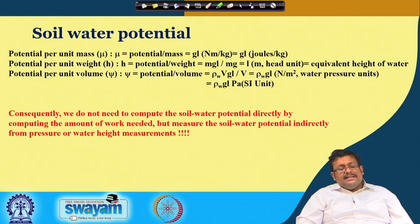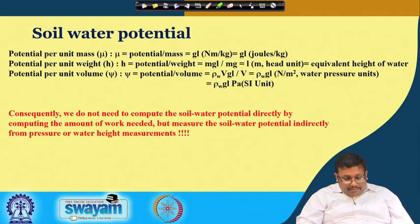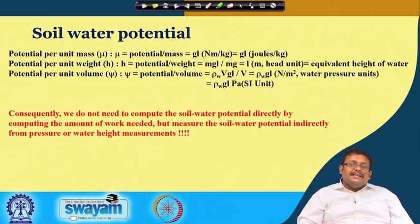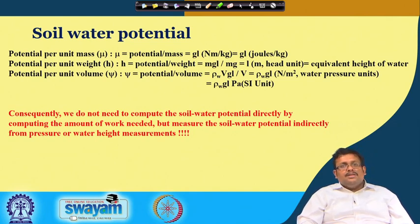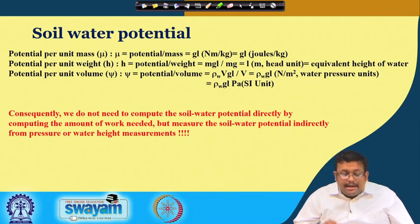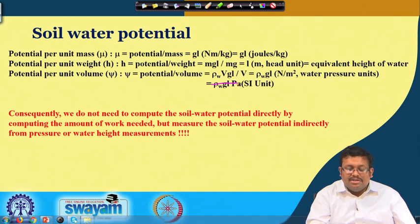Potential per unit weight is expressed in terms of H as a head unit (L), which is equivalent to the height of water, as covered in the case of capillary movement of water. Most importantly, potential per unit volume — denoted psi — is the multiplication of rho_w × g × L, dividing by volume, giving rho_w × g × l, expressed in Newton per meter squared, which is the water pressure unit.